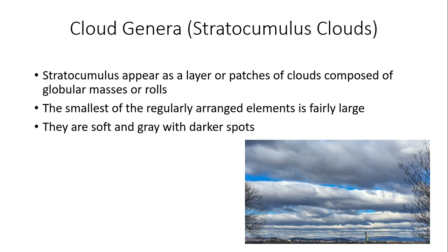Moving on to stratocumulus clouds: these appear as a layer or patches of clouds composed of globular masses or rolls. The smallest regularly arranged elements are fairly large — soft and gray with darker spots. The rows of stratocumulus in the bottom right picture show a generally darker gray appearance that can give a menacing look to the sky as if it might rain. In many cases with stratocumulus, they don't produce very much precipitation at all. The elements are much larger and extend longer in size compared to altocumulus, with more of a dull gray underside.